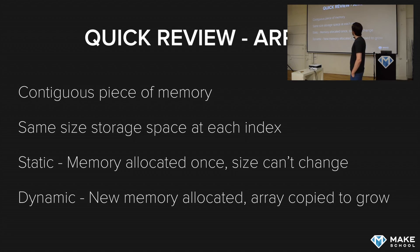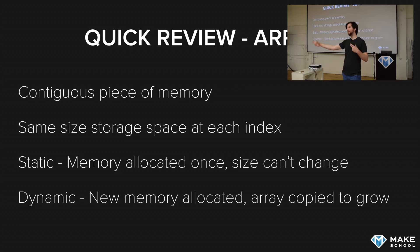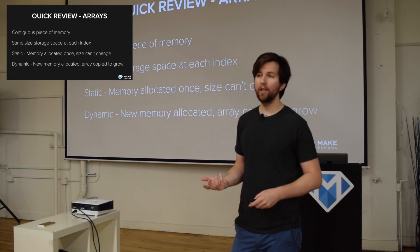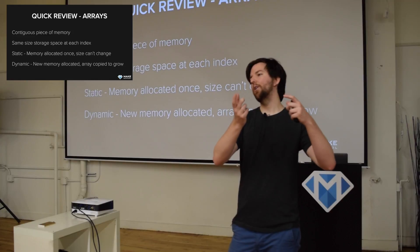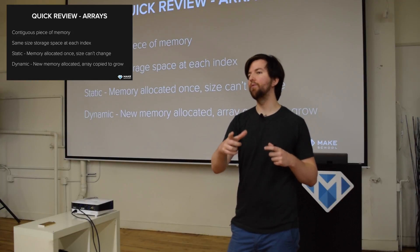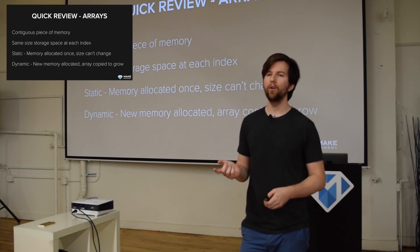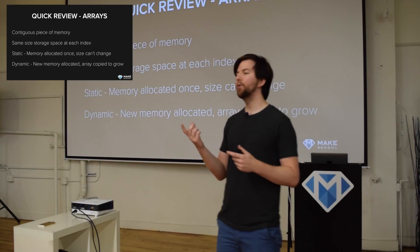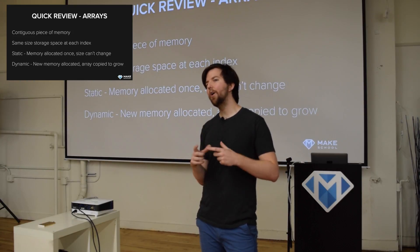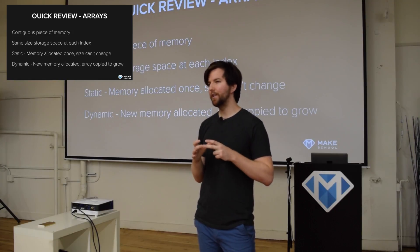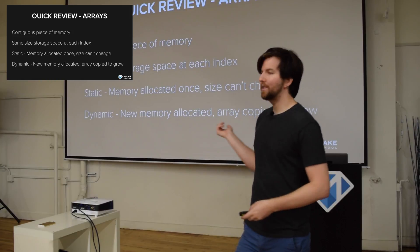With arrays, you can only store the same size data at each index. That means if you're using an array in a C-style language like C or C++, you have to tell the data structure what you're going to be storing before you start, and you can only store one kind of thing. For example, if you had an array of integers, the compiler would look at the size of the integer and know that each allocated space for every element has to be the size of an integer.